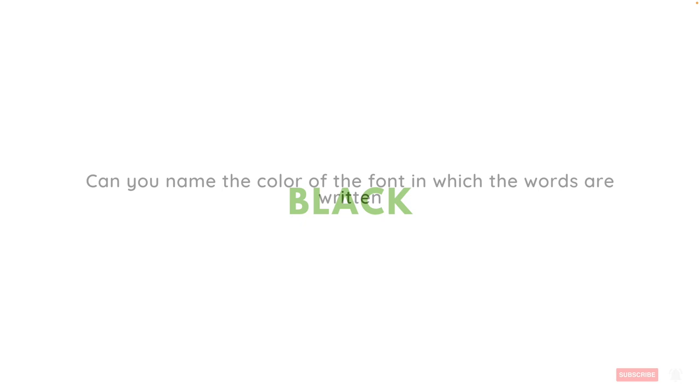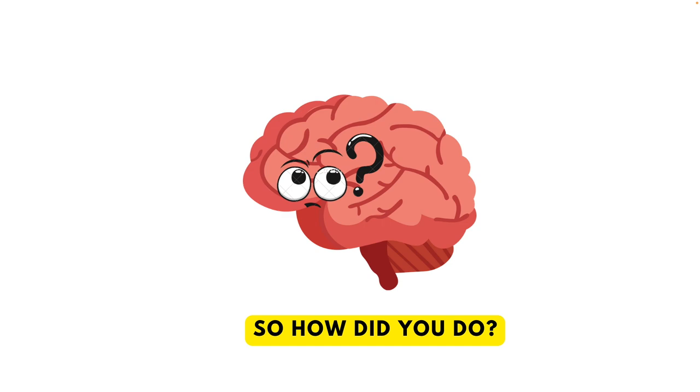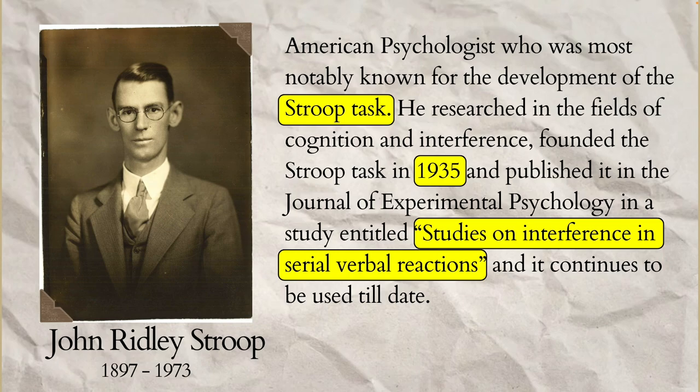Let's start with an experiment. Can you name the color of the font in which the words are written? Let's do a few more trials. So how did you do on this task? The experiment you just performed is called the Stroop task, named after and founded by American psychologist John Ridley Stroop. The Stroop task has been considered one of the most used cognitive psychology paradigms for experimental research in numerous research fields, most notably in the research area of human attention.